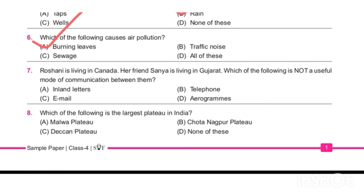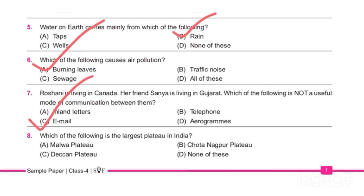Our next question: Roshni is living in Canada and our friend Sanya is living in Gujarat. Which of the following is not a useful mode of communication between them? Canada is a foreign country and Gujarat is a state in India.